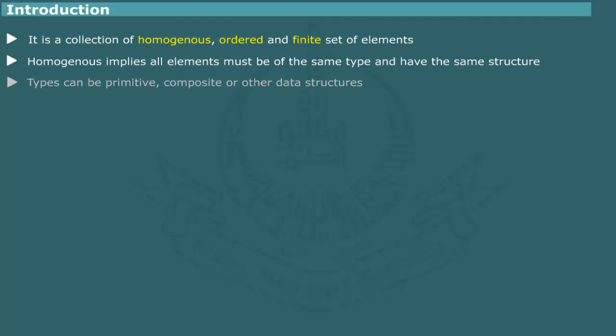The homogeneous property implies that all of the elements of an array must be of the same type and structure. The simplest arrays normally consist of primitive data types such as integers, real numbers, characters or Boolean values.